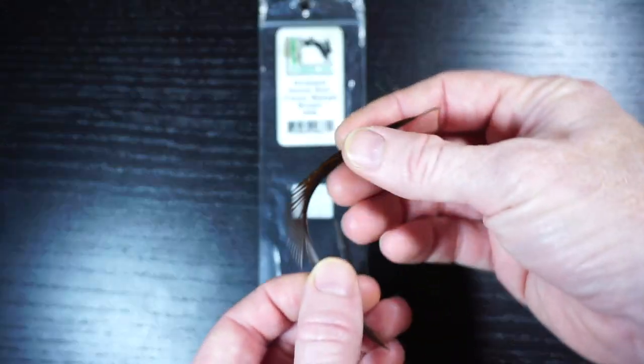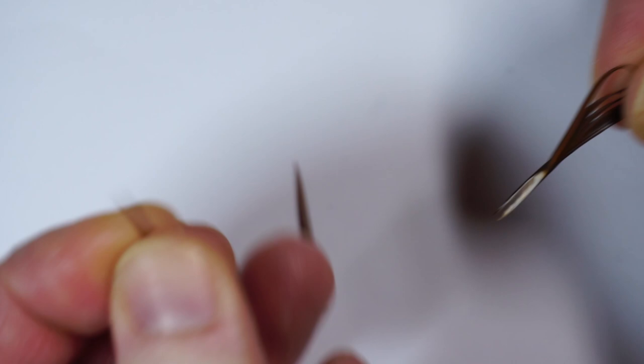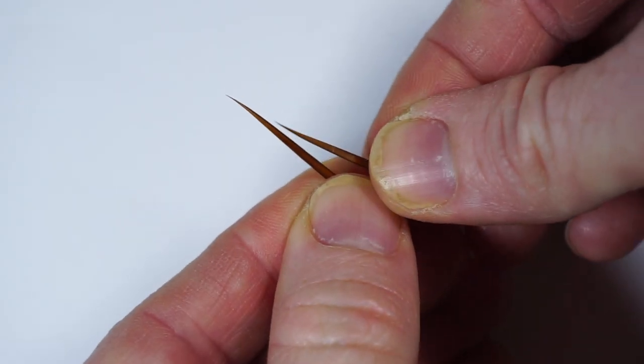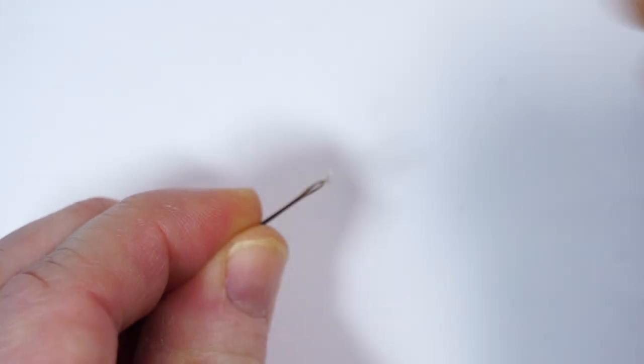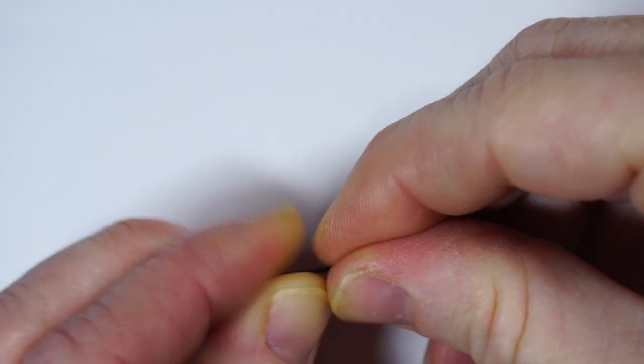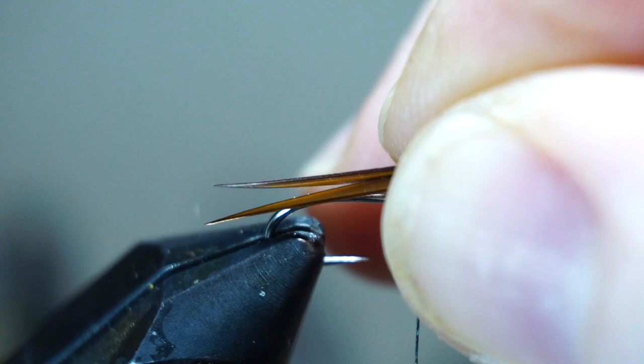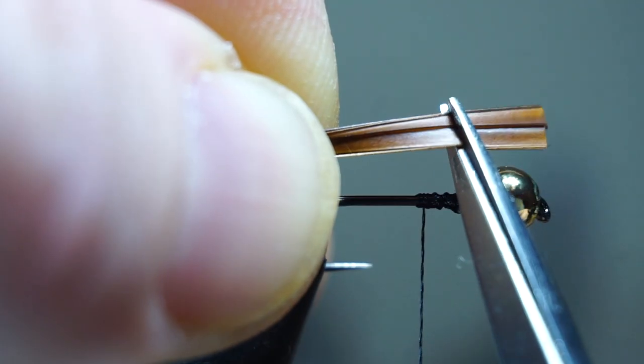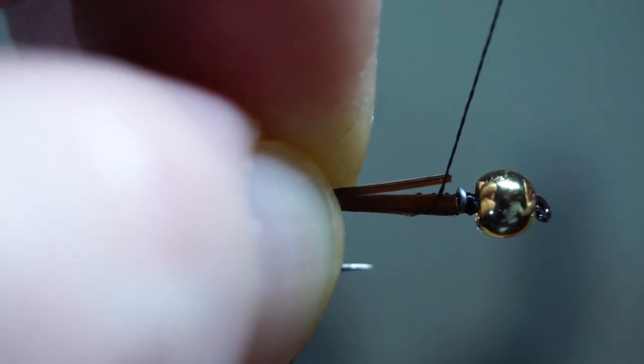Now we need some brown goose biots. Pull off 2 biots. As you can see here, they are curved out slightly. You want to align the tips of these back to back so they splay outward from each other. Clip off the frayed back to get them to sit against each other evenly. Now measure out the tail about a half a hook shank length and then switch hands and hold that measurement against the hook. Then I like to snip off the ends so they will rest right up against the lead wraps to help form a smoother taper.